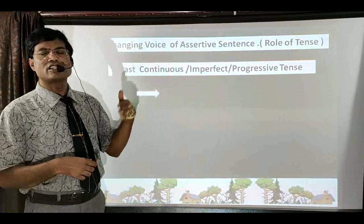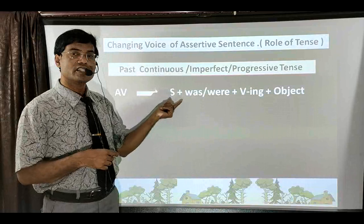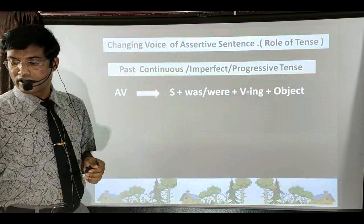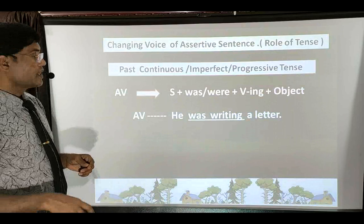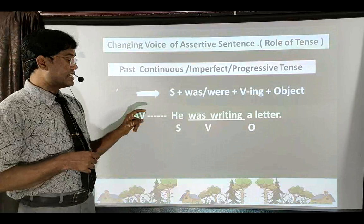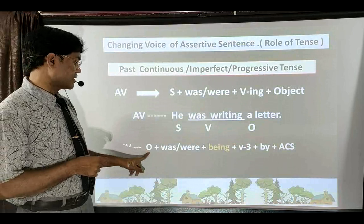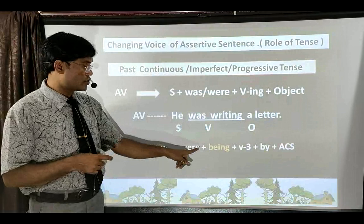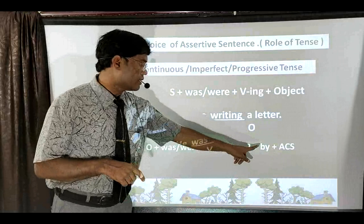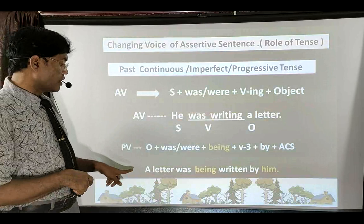Let us talk about Past Continuous Tense, also known as Imperfect or Progressive Tense. Active voice formula: Subject + was/were + verb-ing + Object. Sentences look like: 'He was writing a letter.' Identify subject, verb group, and object. For passive voice in Past Continuous: object first, then was/were, then extra word 'being' (because it's continuous tense), then third form of verb, then 'by' with the objective case of subject.